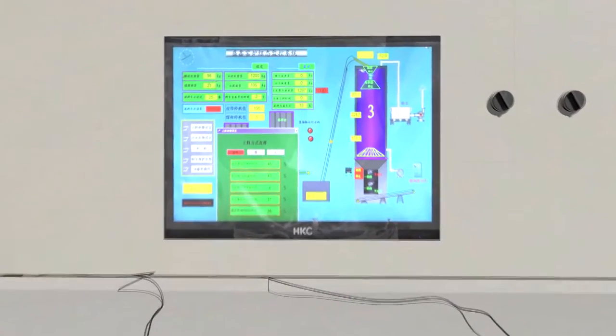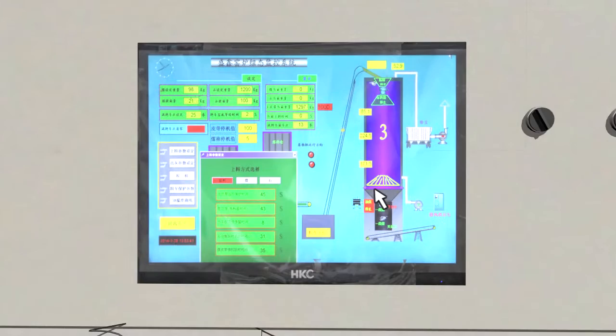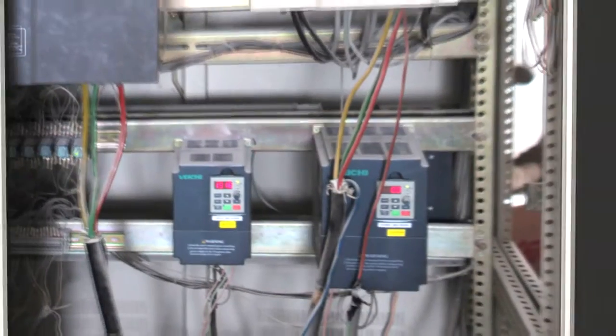The whole production line is controlled by PLC system. All operations of equipment will synchronize display on the computer screen. With frequency counter and control cabinet, the lime kiln can fulfill fully automated production.